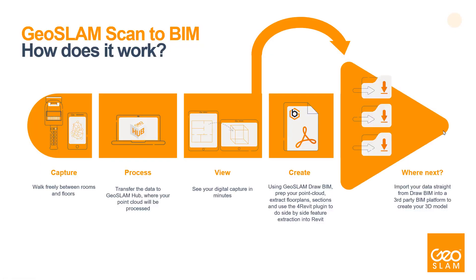The scan-to-BIM workflow breaks down into five easy steps. First, capture data: power on the scanner, initialize a scan, walk freely to collect data, and transfer it off the system as a .GeoSlam file. Next, process the data: drag and drop that file into Hub software, where data is processed into a finished point cloud. This step is entirely automated and passive — go grab a coffee, and by the time you're back, your data will be finished stitching.